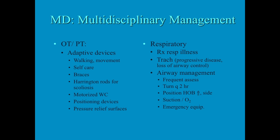Muscular dystrophy requires a multidisciplinary approach to management, involving dietary, occupational therapy, physical therapy, neurology, nursing, and medicine. Adaptive devices help them walk and move, and braces are used to minimize contractures. Promoting self-care as long as possible is a priority. For children who develop scoliosis, Harrington rods may be placed in the OR. A motorized wheelchair allows some independence as long as the child can operate a control apparatus.